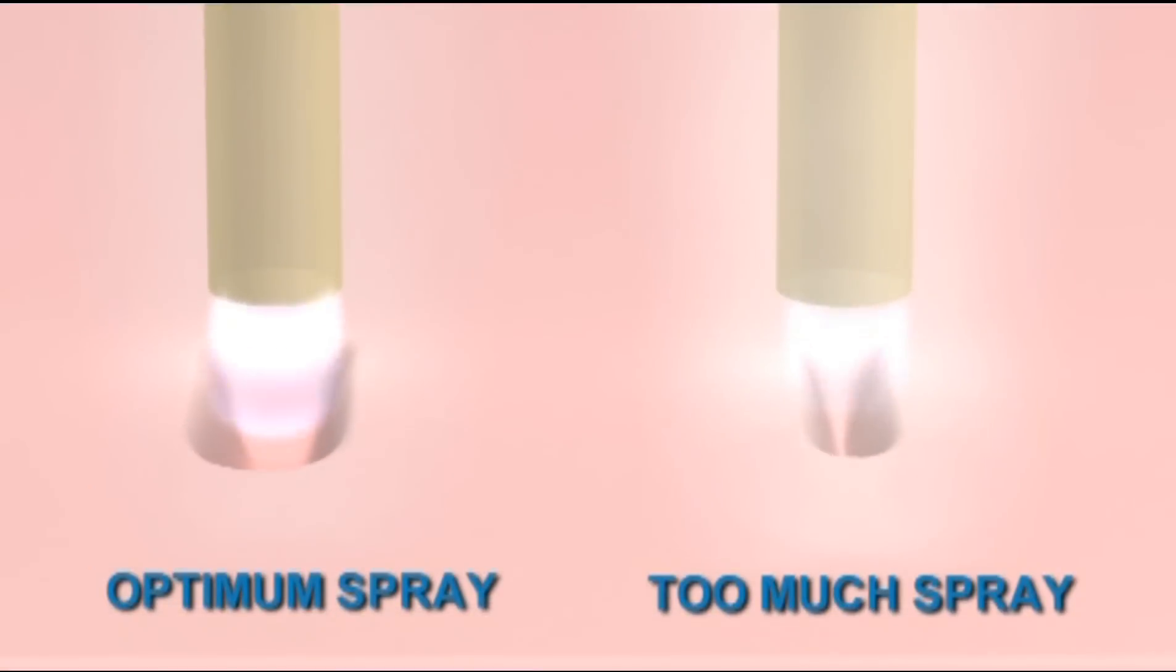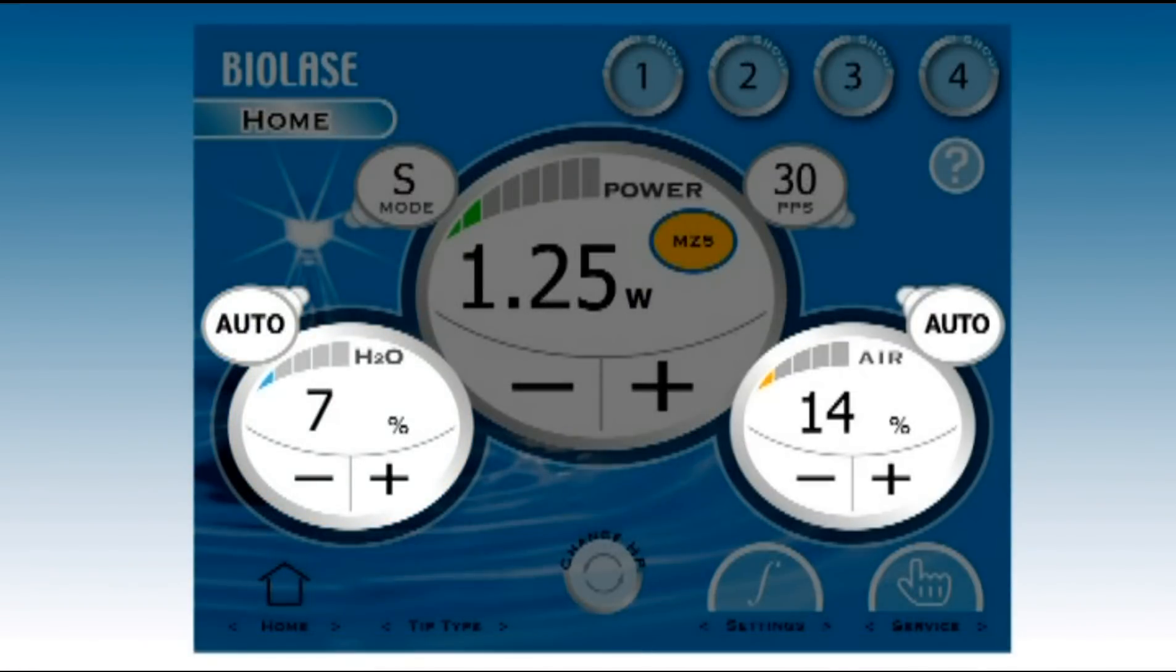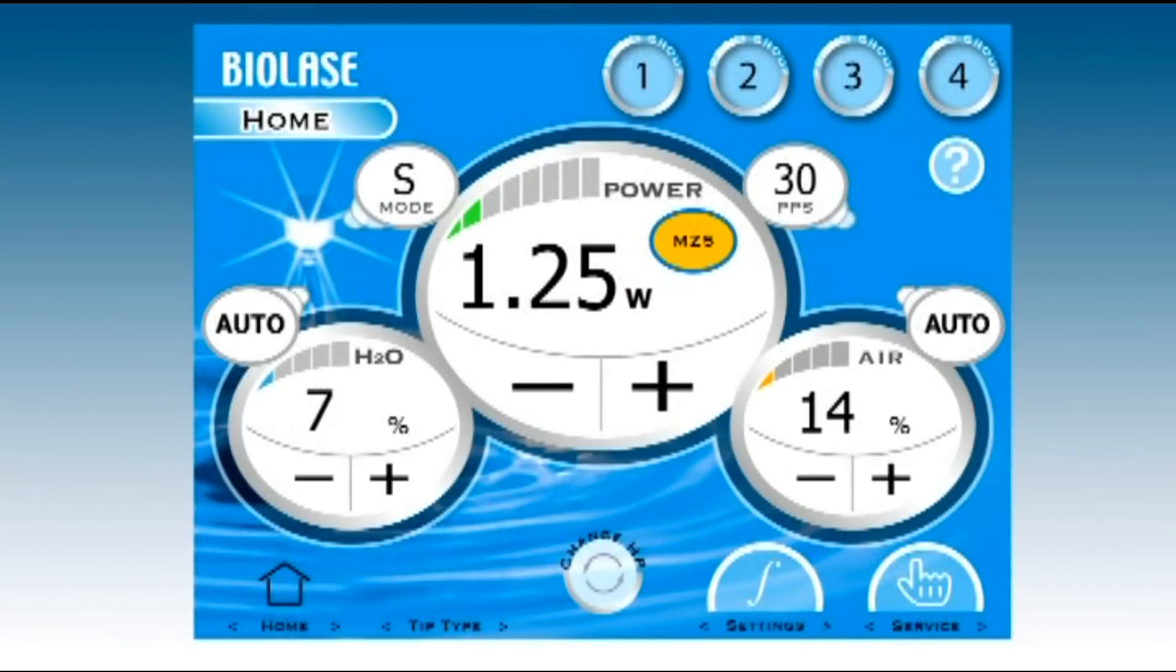Adequate air and water spray keeps soft tissue from charring. Too much spray will absorb more laser energy and reduce cutting speed. A good ratio is one part water to two parts air. Again, simply watch your results and adjust as needed.